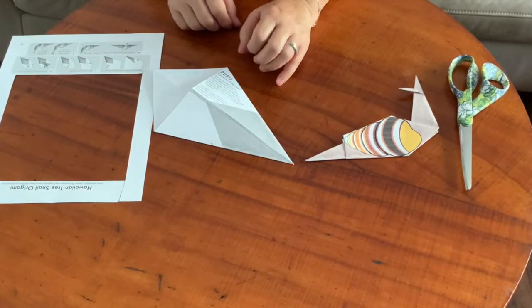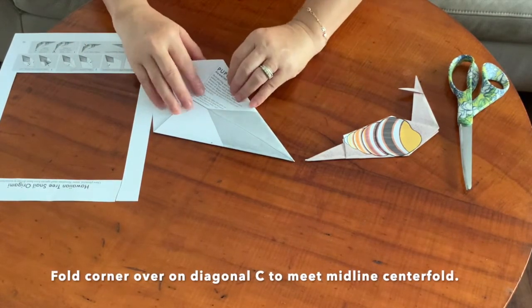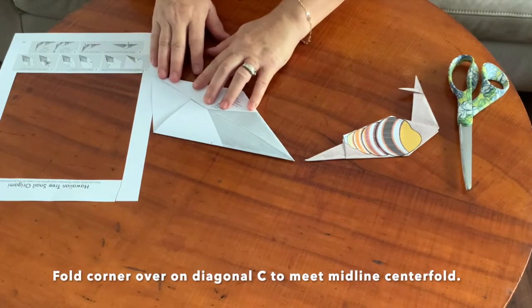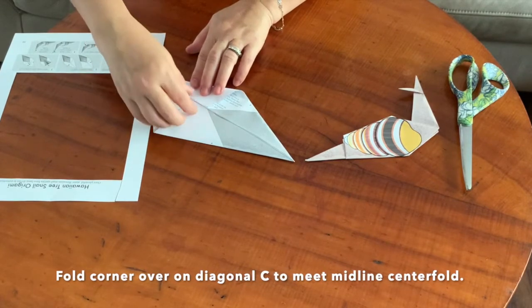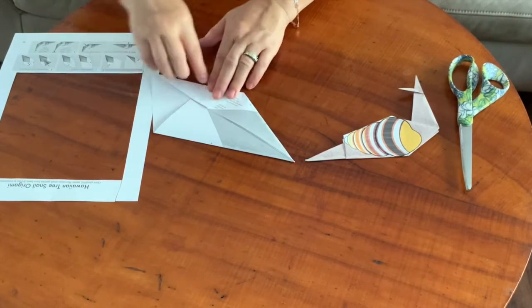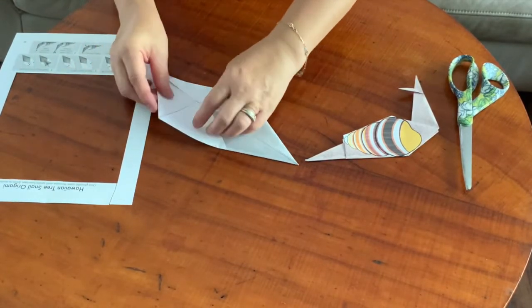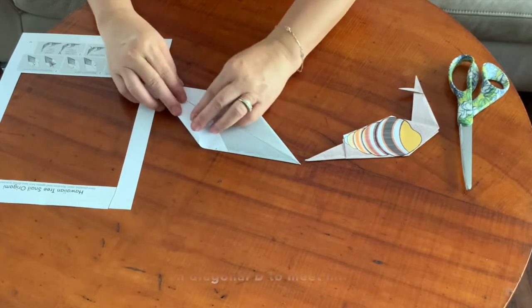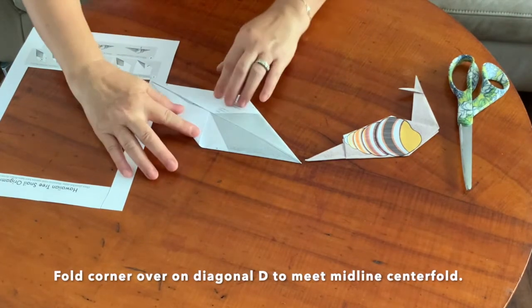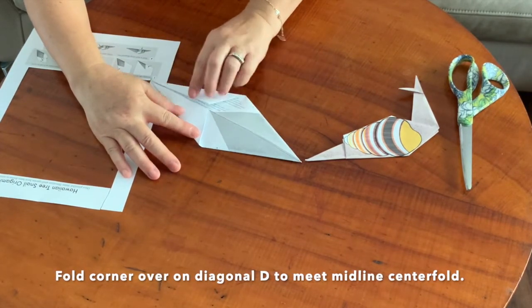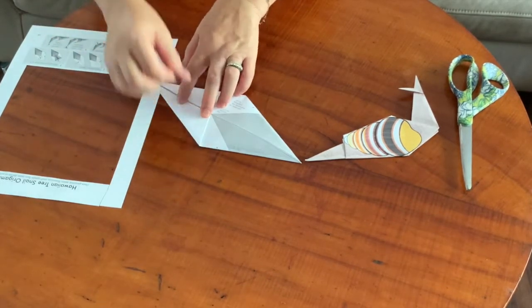Now you're going to repeat it on the other side, matching this edge against that midline and creating a nice sharp crease. Then last, you're going to do it on the other side, creating a nice corner at the tip right here and then matching this against that diagonal fold and then running your finger over it to create a nice crease.